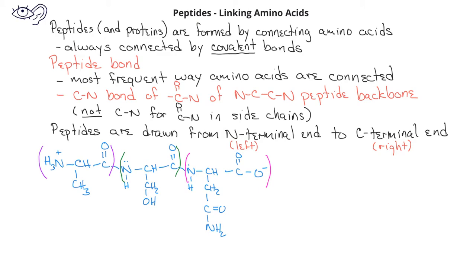The peptide bond on the first connection between two amino acids is the carbon-nitrogen bond of the amide functional group indicated here. We have a second peptide bond, also a carbon-nitrogen bond of an amide functional group connecting another two amino acids.